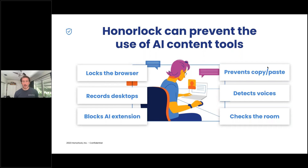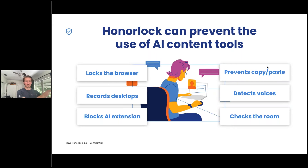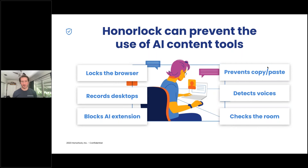Honorlock records your desktop, assuming you elect to turn that feature on during your exam. That means you have evidence of what's going on during the test. You don't need to be reliant on any percentage score from an application — you have video evidence of what went on on the student's testing screen during the exam that you can reference and build a case if you need to.